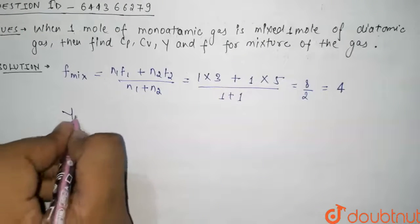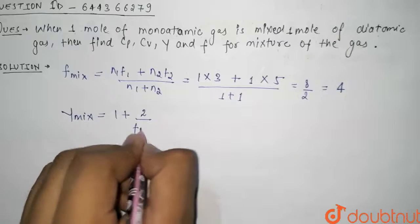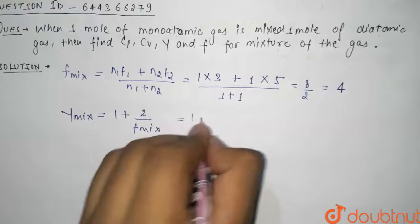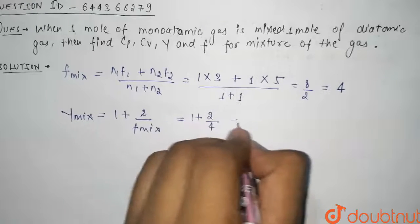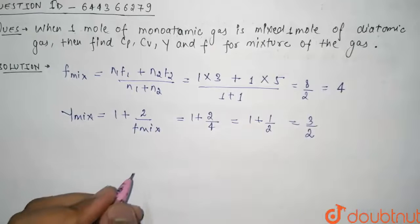Now we have to find gamma of the mixture, and we know that gamma is 1 plus 2 divided by F of mixture. So it will be 1 plus 2 divided by 4, which will be 1 plus 1 by 2, that is 3 by 2. So gamma of mixture comes out to be 3 by 2.